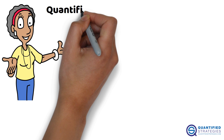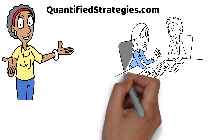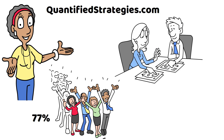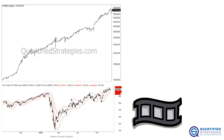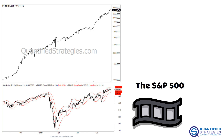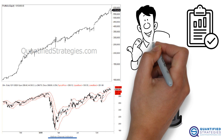Welcome to QuantifiedStrategies.com. Have you ever wondered if there's a simple trading strategy with a 77% win rate? In today's video, we'll look at a rule-based system using Keltner channels applied to the S&P 500. We'll cover what Keltner channels are, how the strategy works, and the results. Let's dive in.